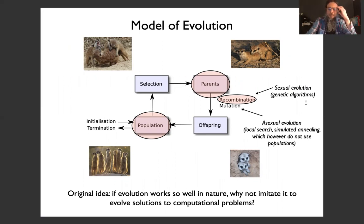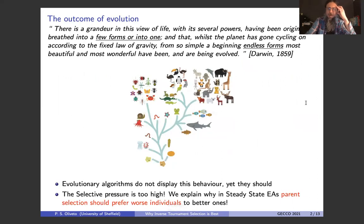So what is the outcome of evolution? One of the main points of Darwin's theory is that from an initial few forms of life, or maybe even only one, evolution has evolved a wide variety of different species. However, evolutionary algorithms do not really display this behavior, even though you would expect them to.